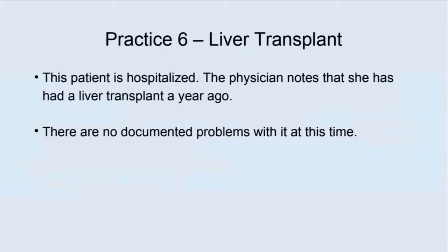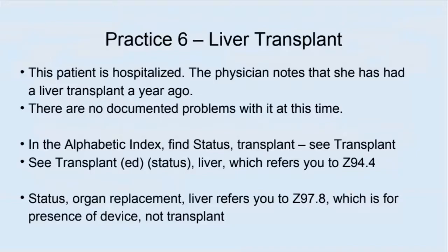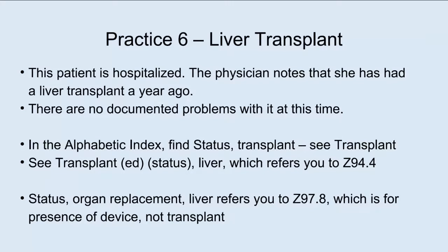Practice: This patient is hospitalized. The physician notes that she has had a liver transplant a year ago, and there are no documented problems with it at this time. We're going to use Z94.4. In the alphabetic index, find status, transplant, then transplanted status, liver, which refers you to Z94.4. If you look up status, organ replacement, liver, that refers you to Z97.8 — but this is for presence of a device, not a transplant. Be careful; these are easily confused.